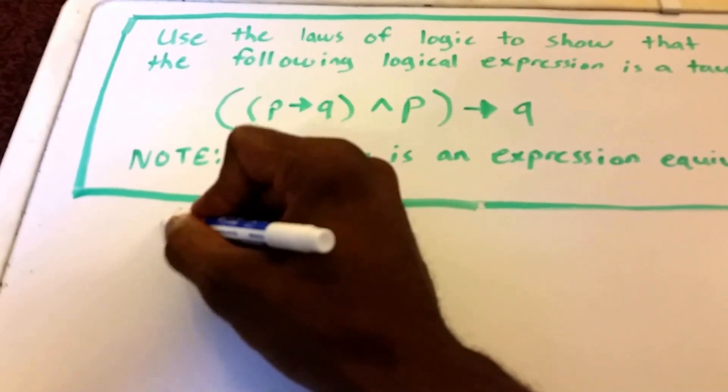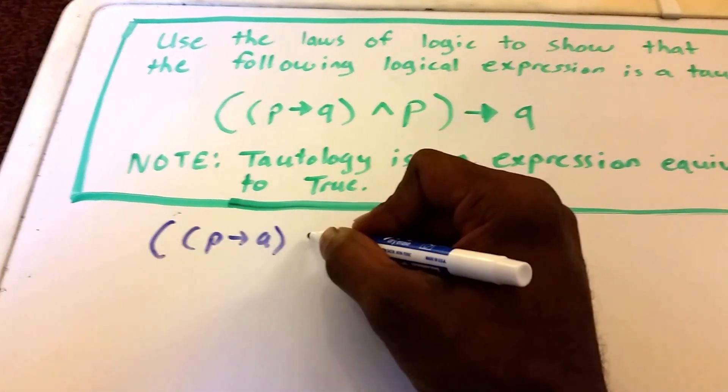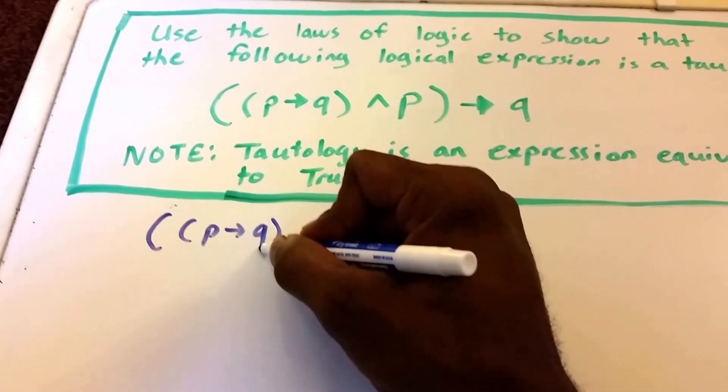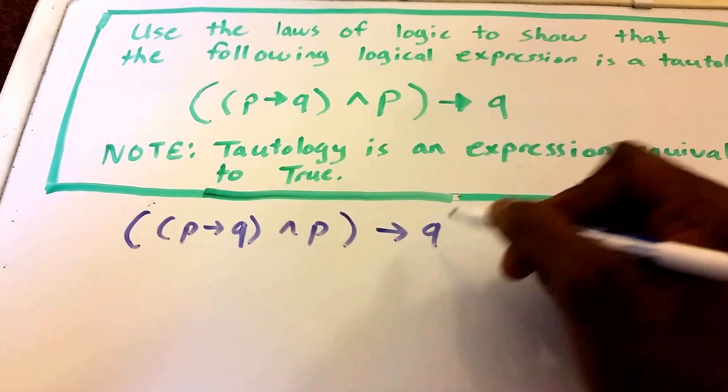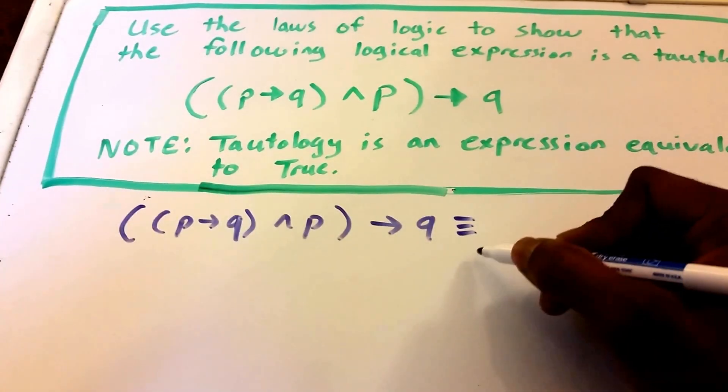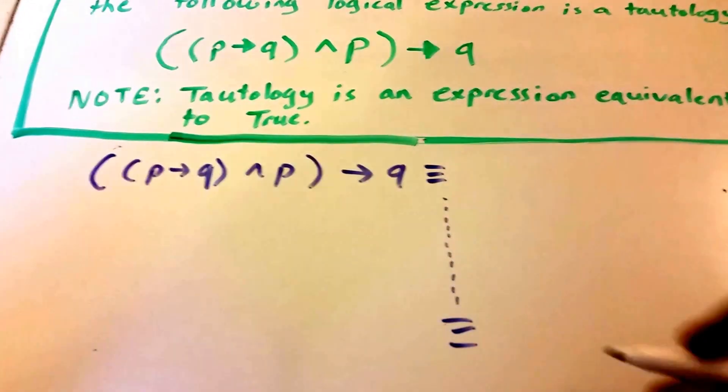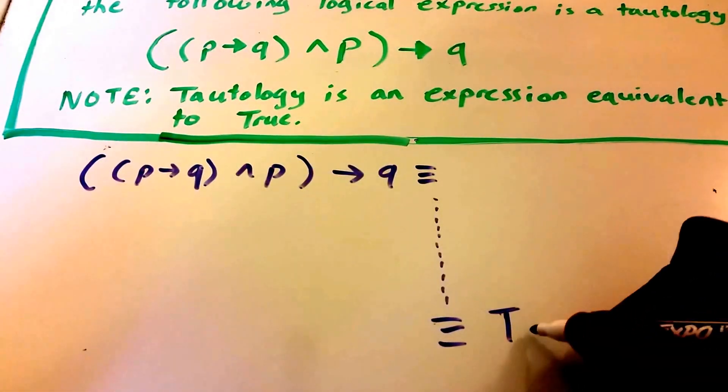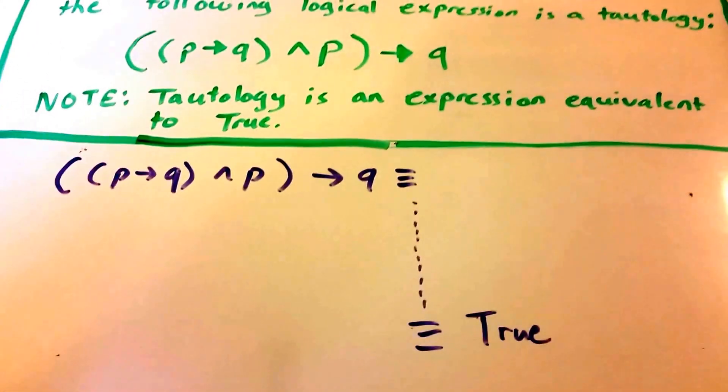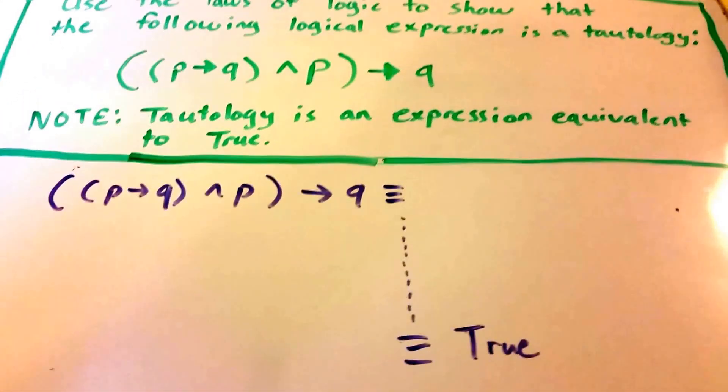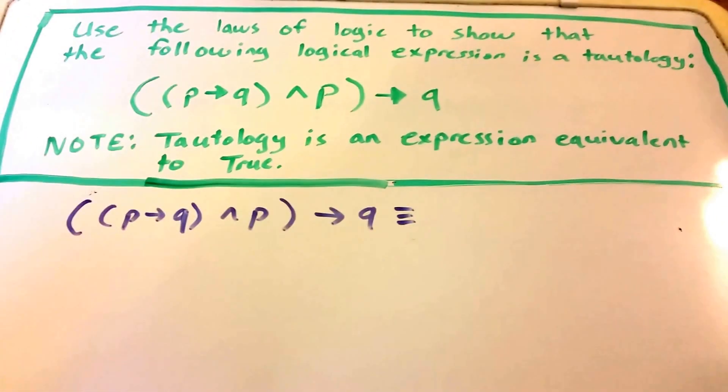So what we want to show is P implies Q and P, all of that implies Q. And we want to show that it's logically equivalent using some steps in between. We want to show that it's logically equivalent to true. I put T here, or you can put true here. But usually you'll see T for true and F for false. So let's go ahead and get started.